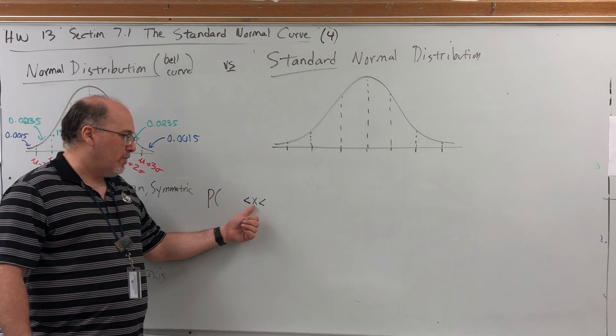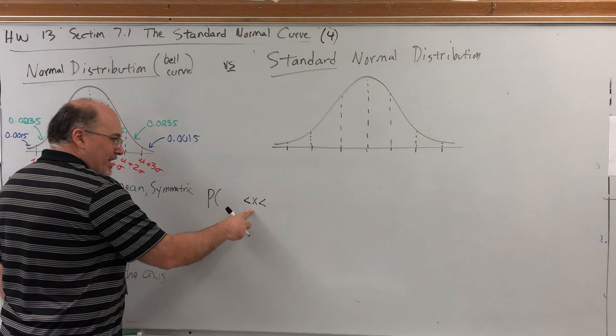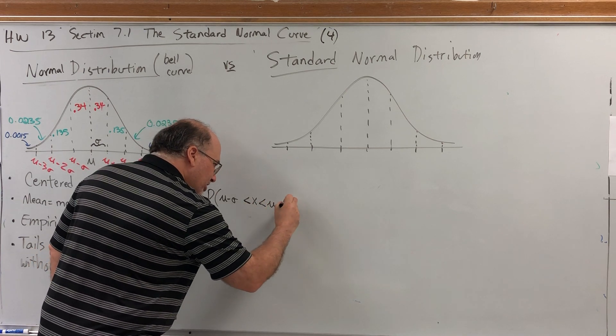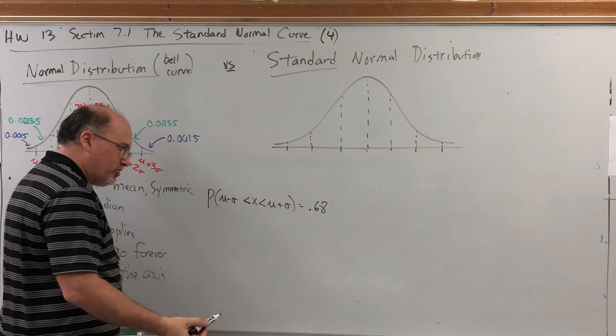The probability that x is between mu minus sigma and mu plus sigma is equal to 0.68, or 68%.